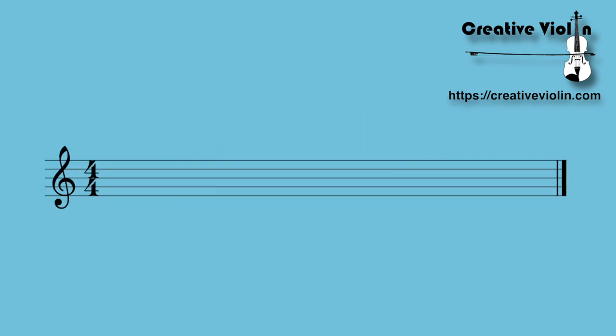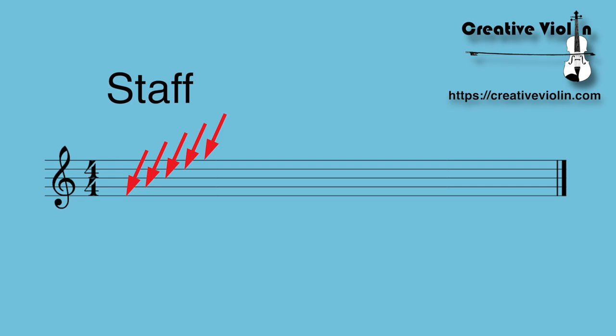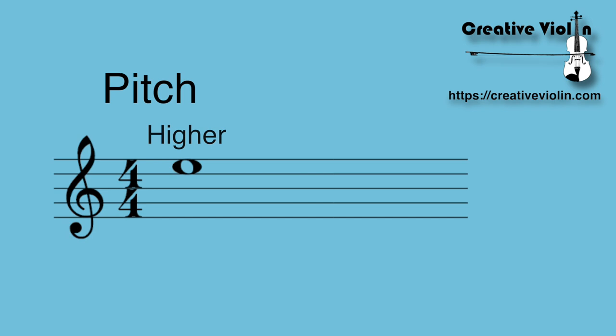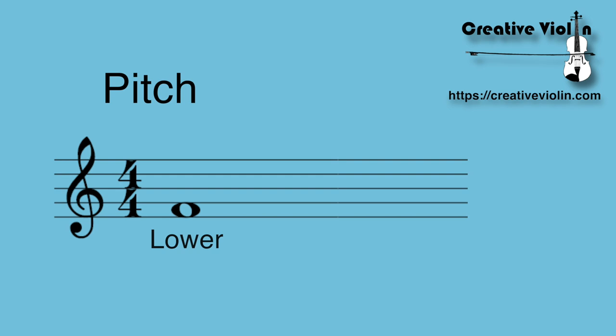To start off with reading and translating that to a violin, let's dive right into the basics. First of all, you'll see the staff. The staff has five lines in it and this is where we place the notes. If we place a note higher in the staff, it's going to sound higher. Place the note a little bit lower, it's going to sound lower. That is the pitch.